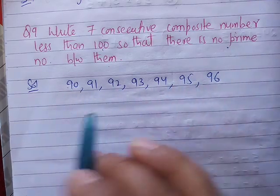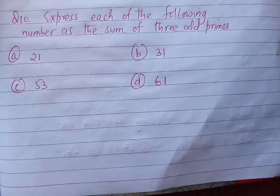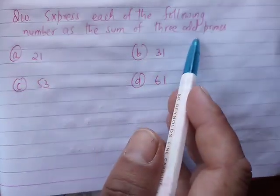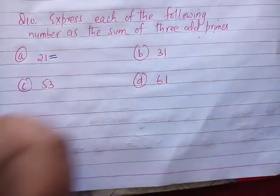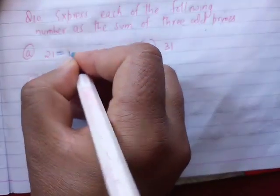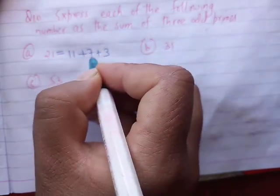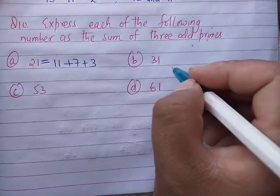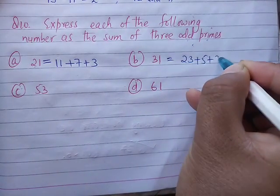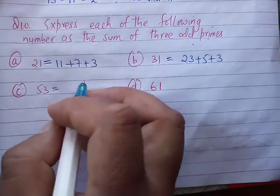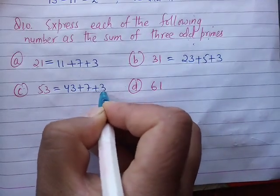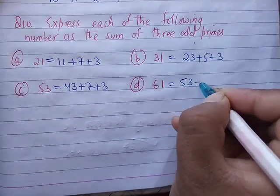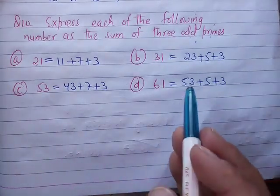Question number ten: Express each of the following as the sum of two primes. For 21, that's 11 plus 7 plus 3. Wait, the sum should be two primes. So 21 equals, let's use 19 plus 2. For 31, that's 23 plus 8, no wait, 29 plus 2. For 53, that's 47 plus 6, or 43 plus 7 plus 3.